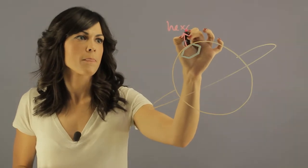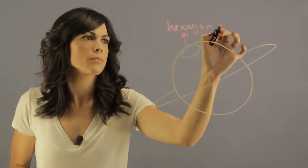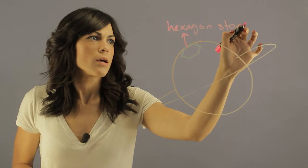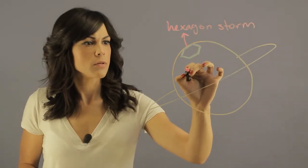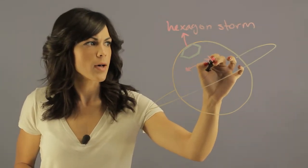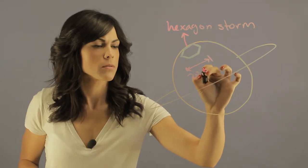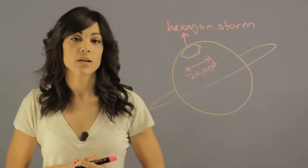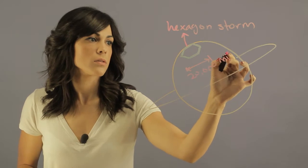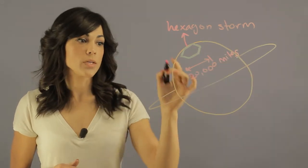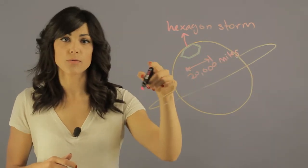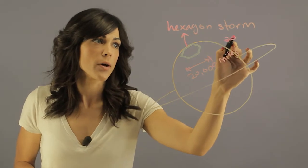A hexagon storm is actually about 20,000 miles across and it has winds with a turbulent flow of about 200 miles per hour.